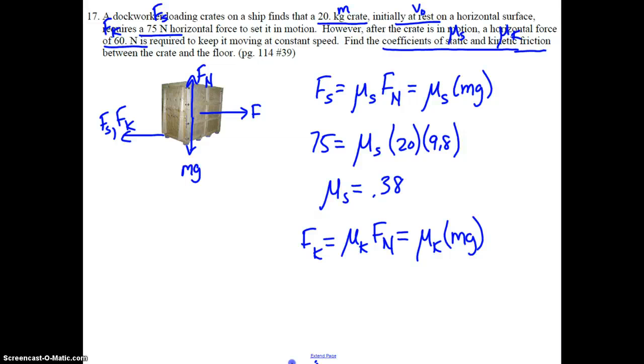Go ahead and substitute. The kinetic friction here is 60 equals mu_k times 20 times 9.8 and solve for mu_k. Pause if you need a moment. And checking your answer, you should get 0.31.